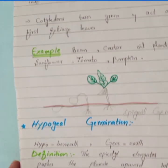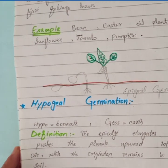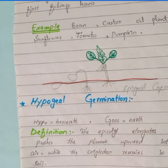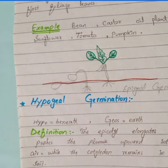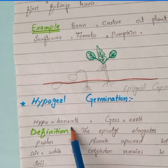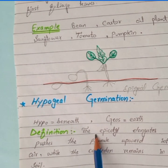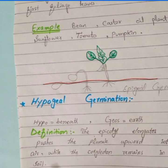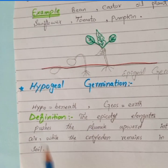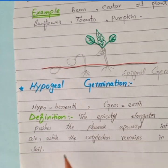Now moving to hypogeal germination. 'Hypo' means beneath, under, or below, while 'geo' means the earth. So in this case, the cotyledon will remain under the soil. The definition states: the epicotyl elongates and pushes the plumule upward into the air, while the cotyledons remain in the soil.